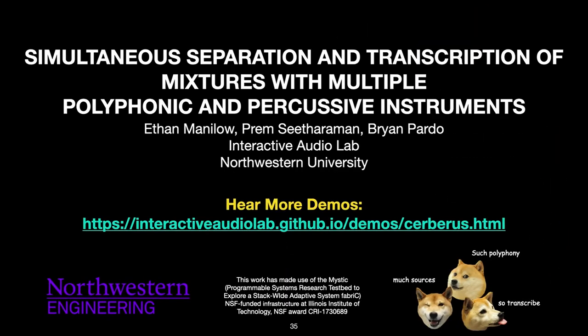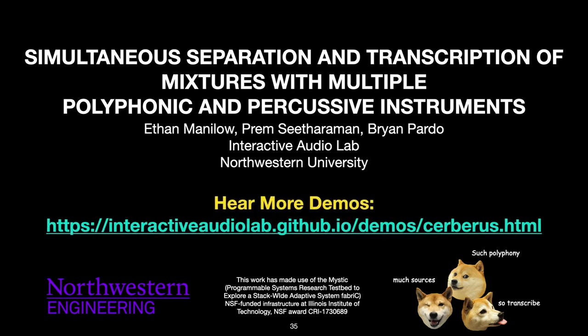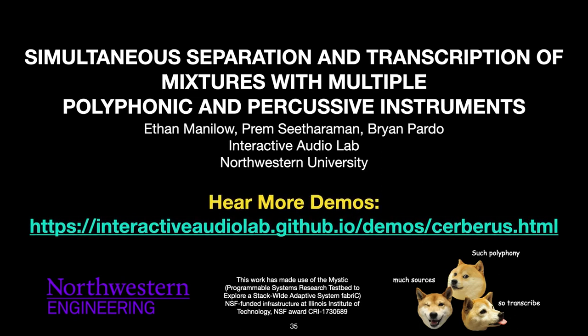In this video, we have presented Cerberus, a three-headed, multi-task deep learning architecture that can simultaneously isolate and transcribe individual instruments in a musical mixture. We have shown that Cerberus can separate and transcribe multiple polyphonic and percussive instruments more effectively than single task networks. Further research might include using more sophisticated architectures for the source separation and transcription heads, such as an onsets and frames style architecture. For further details, please refer to our paper. Thank you for watching.